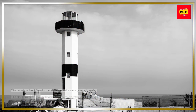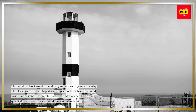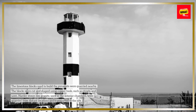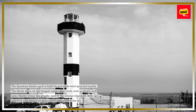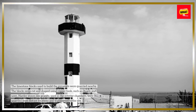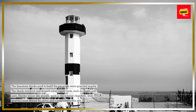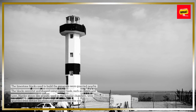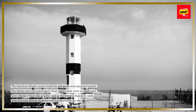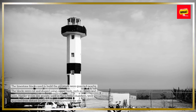The limestone blocks used to build the pyramids were quarried nearby. The blocks were cut and shaped using copper tools, such as chisels and saws. Harder stones like granite, used in the interior chambers, were quarried from distant locations and transported to the site.